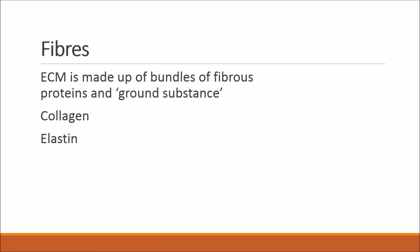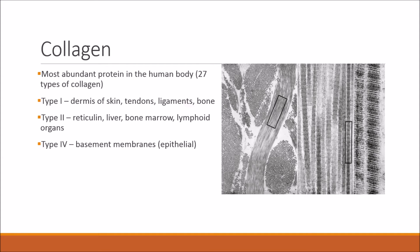In terms of fibres, the extracellular matrix is made up of bundles of fibrous proteins and ground substance. The main two types of fibres are collagen and elastin. Collagen is the most abundant protein in the human body, with approximately 27 different types. Type 1 collagen is found in the dermis of the skin, tendons, ligaments, and bone.